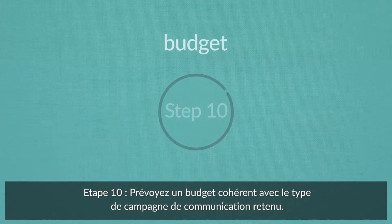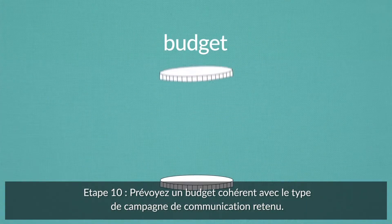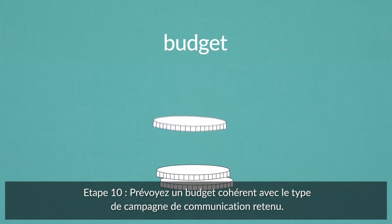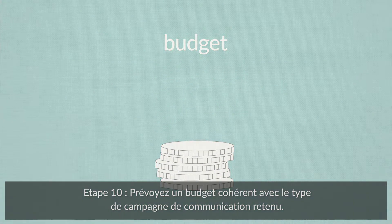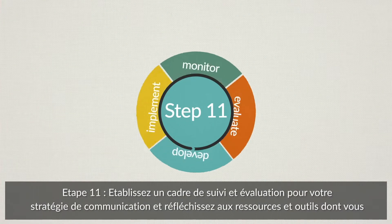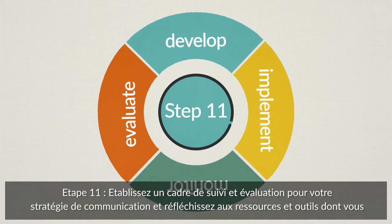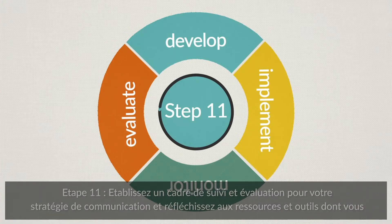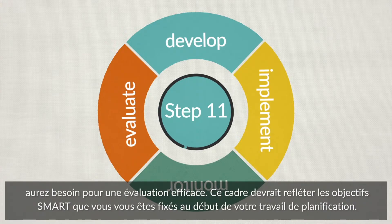Step 10. Budget for the type of communications campaign you're planning to lead. Step 11. Establish a monitoring and evaluation framework for your communication strategy, and consider the resources and tools you will need to evaluate effectively. This should reflect the SMART outcomes you set up when you started planning.